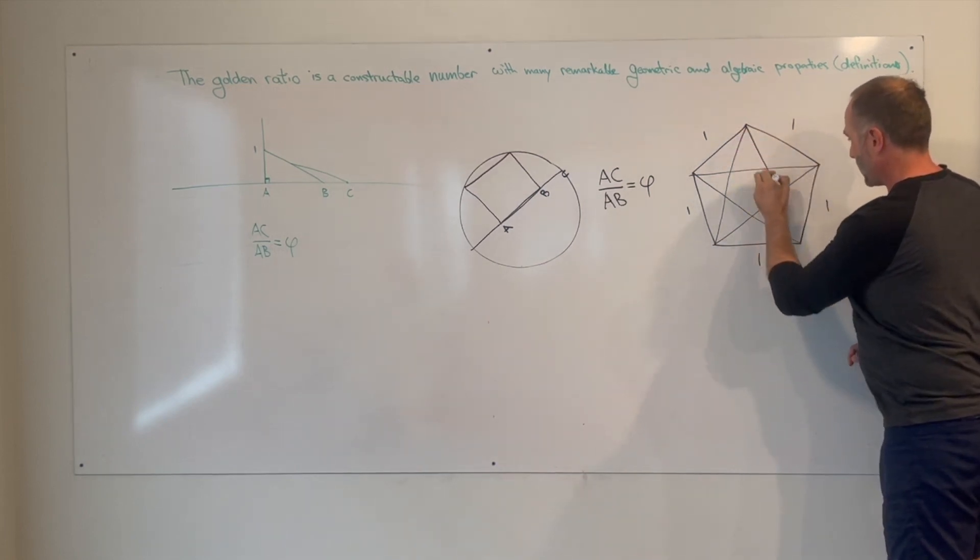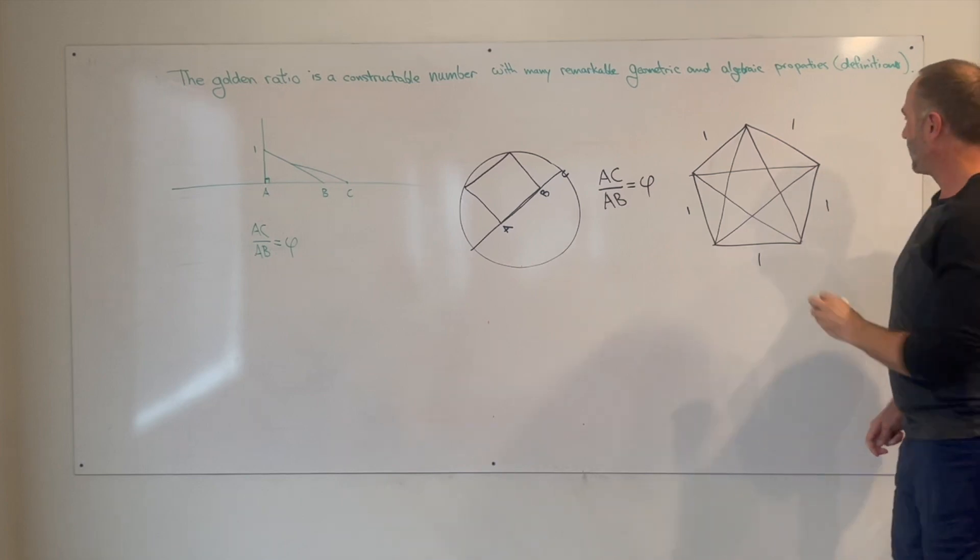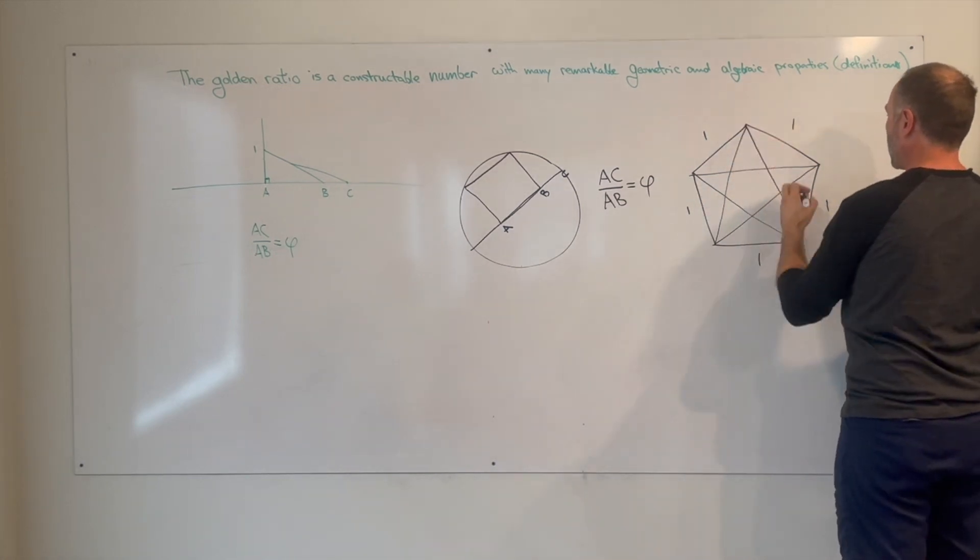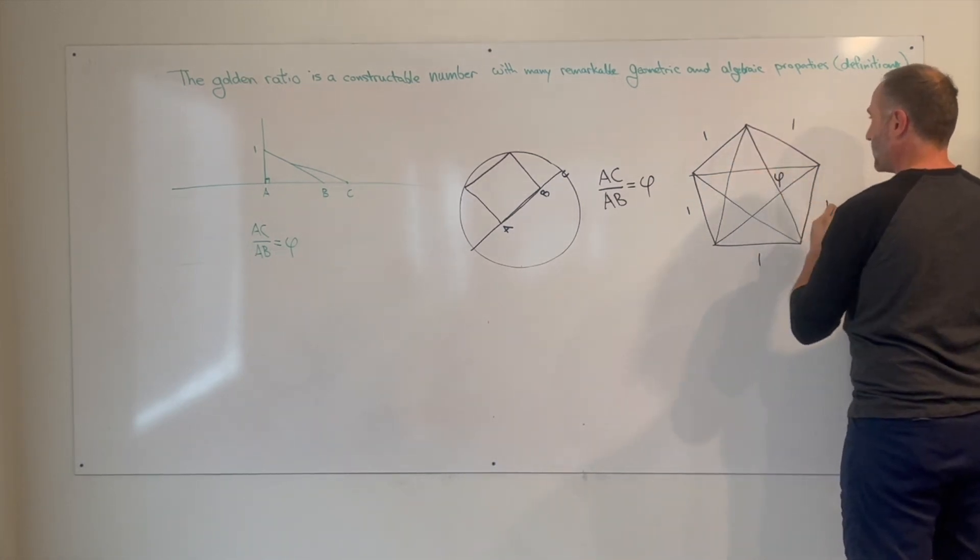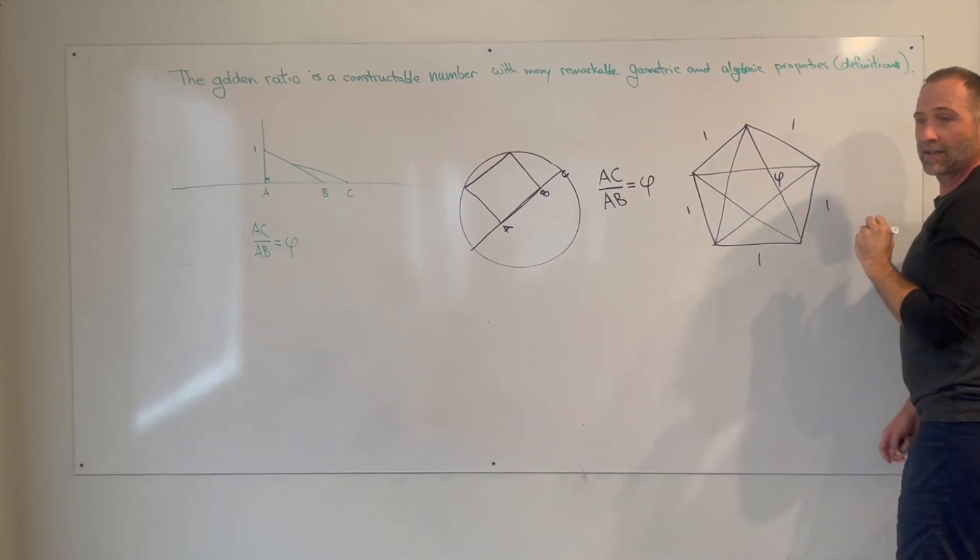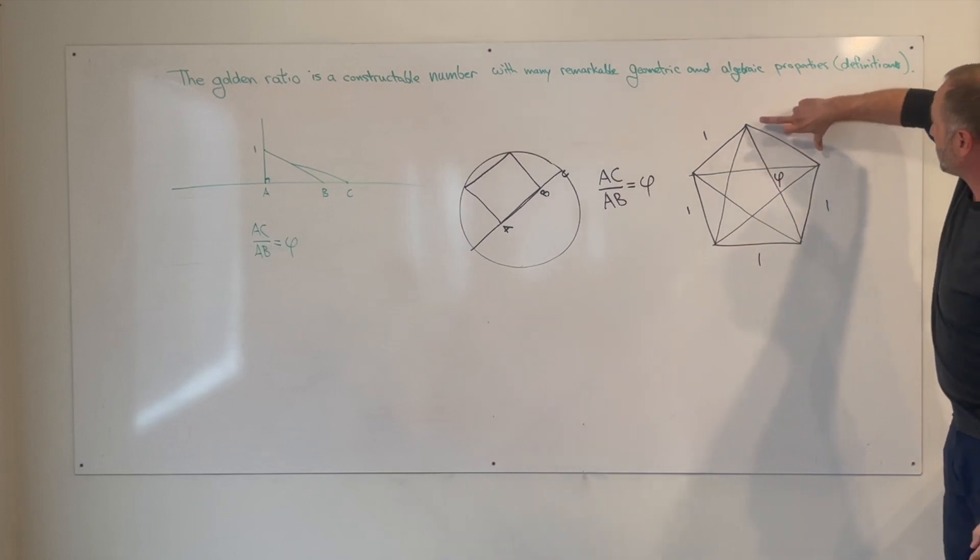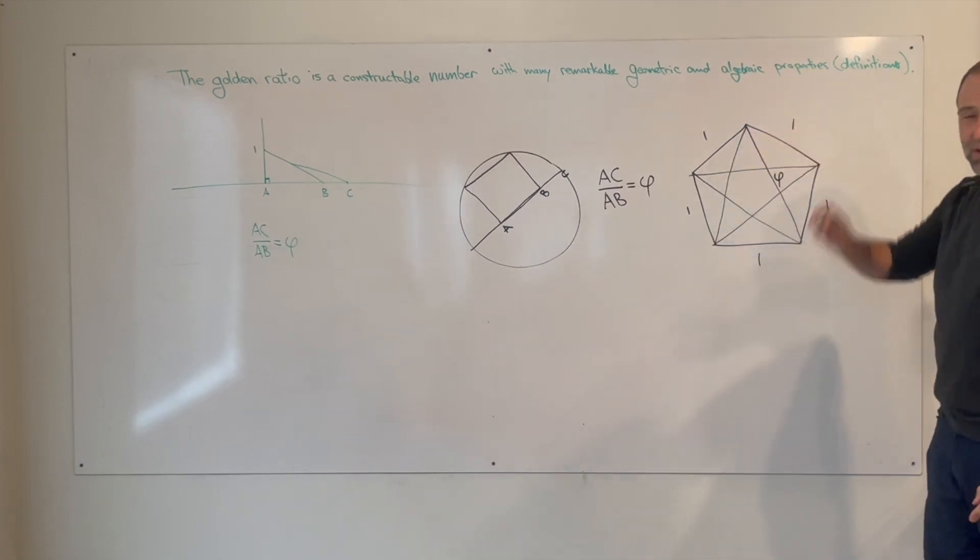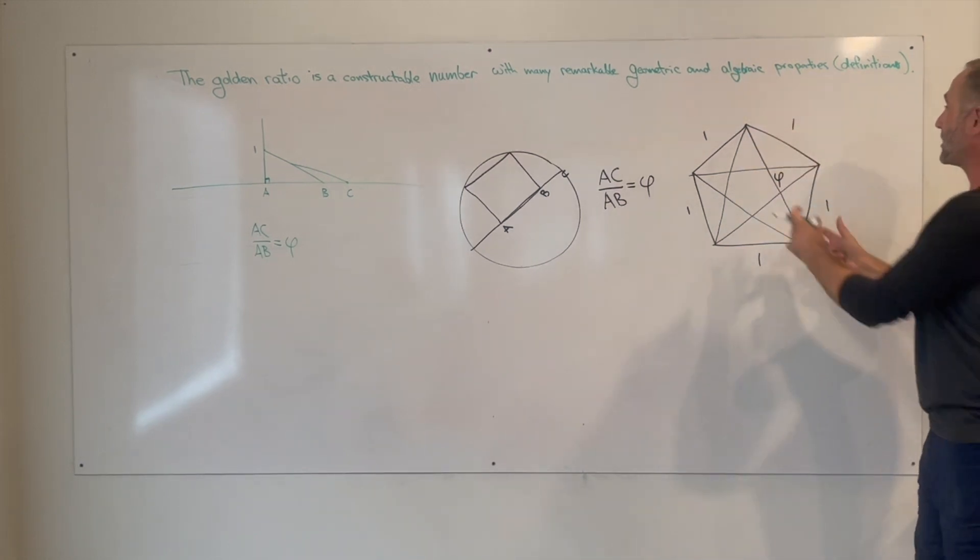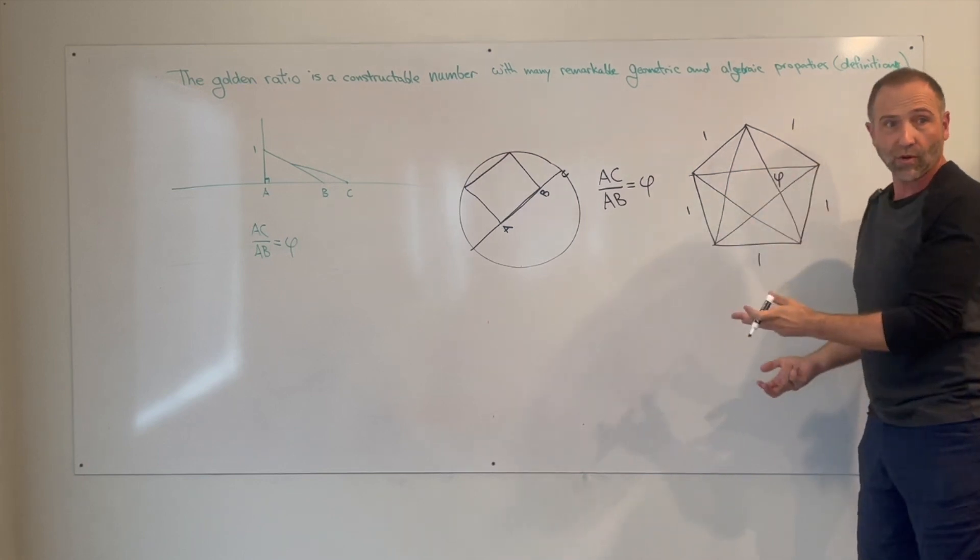So it has a bunch of diagonals. All the diagonals have a length of the golden ratio. Pick any diagonal. As long as the sides have a length of one, then the diagonals are a length of the golden ratio. So it's built into that form, that geometric form.